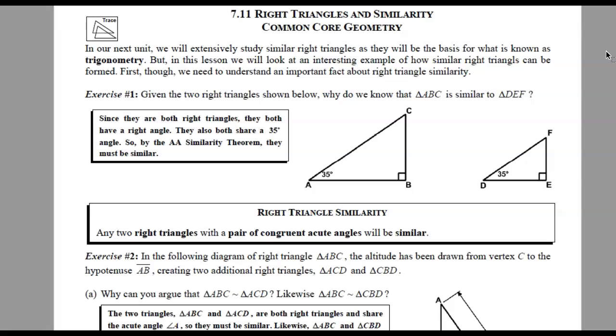So exercise one, we have two right triangles. How do we know that the two triangles are similar? If they both have a right angle and they both have one of the same acute angles, then they have to be similar because we have angle-angle similarity. So generally speaking, any two right triangles with a pair of congruent acute angles have to be similar since they both have a right angle as well.